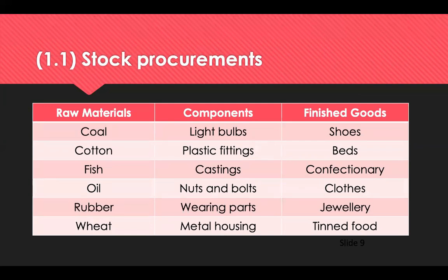We're now going to look at the difference between stock and non-stock procurements. Stock procurements are things listed in inventories, such as raw materials, components or finished goods. Raw materials are extracted from the natural source by the primary sector — things like cotton, coal, fish, rubber and wheat. Components are manufactured by the secondary sector, taking raw materials and creating components like nuts, bolts and parts. Finished goods are stocked by a retail store and sold to consumers. They need to be managed carefully to keep inventory as cost effective as possible, as effective stock control can save organisations huge sums of money.